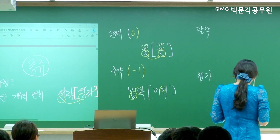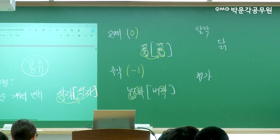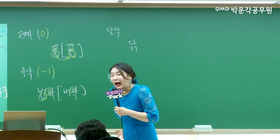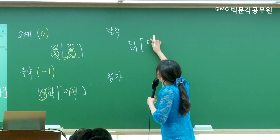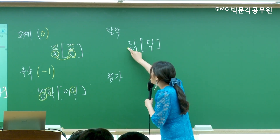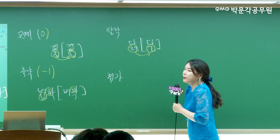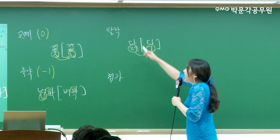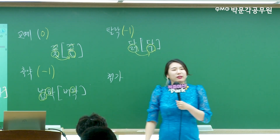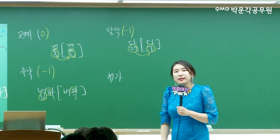탈락을 볼게요. '닭'을 발음하면 [닥]이라고 하죠. 발음 기호에서 음운의 개수가 두 개인데 한 개로 줄었죠. 탈락은 음운의 개수가 마이너스 1이에요. 탈락이 한 번 일어났으면 그냥 마이너스 1 하면 끝나요. 일일이 다 셀 필요 없어요.